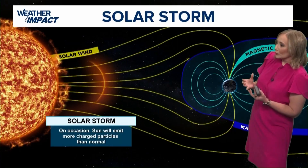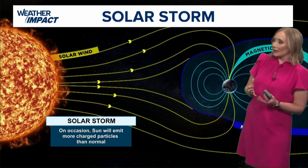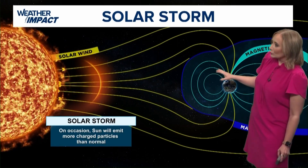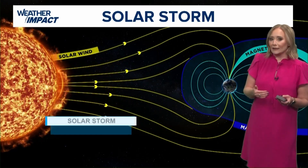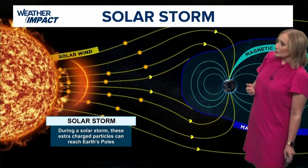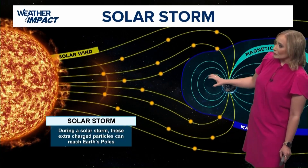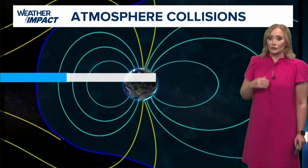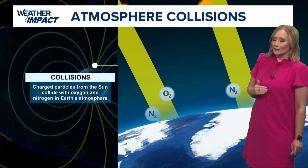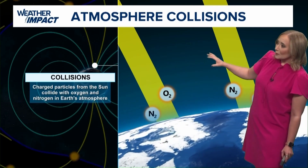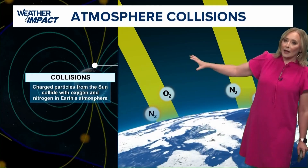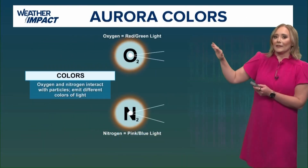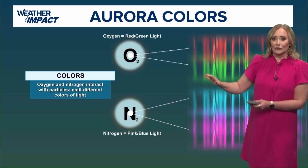Then you have a solar storm. On occasion, the sun will emit more charged particles than normal, so they are able to penetrate that shield. And during a solar storm, these extra charged particles will reach Earth's different poles — the North Pole and the South Pole. Now, charged particles from the sun then collide with oxygen and nitrogen in Earth's atmosphere, and that's what gives us the different colors.